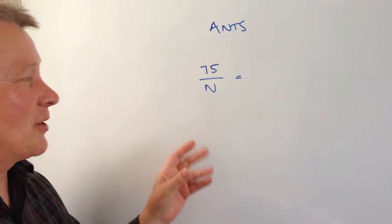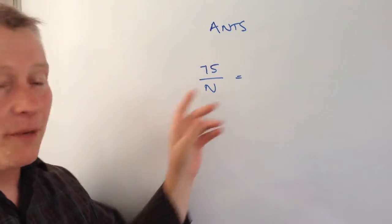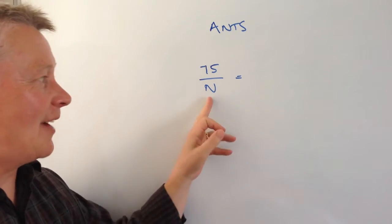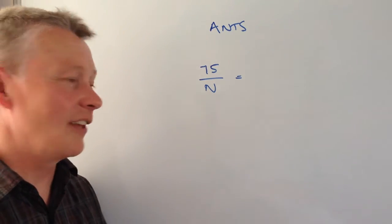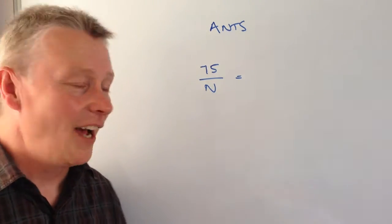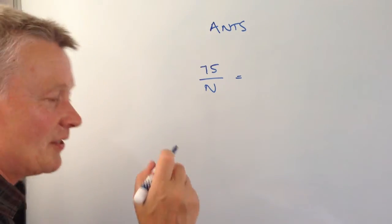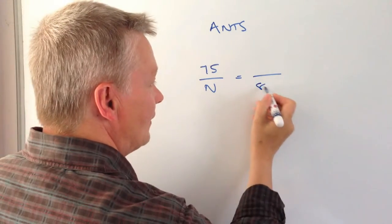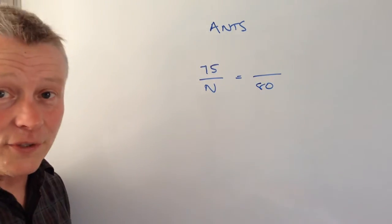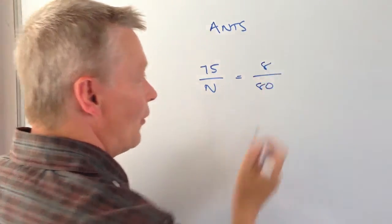Basically it deals with this question where somebody goes out and they mark 75 out of the total population of ants. I've used the letter N just to mean that, and then they go back a week later and they capture another 80 ants and they find that out of the 80, eight of them have got the marking.